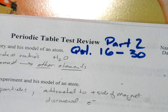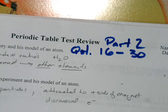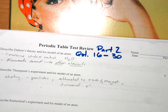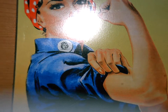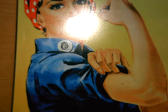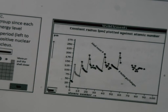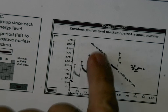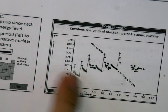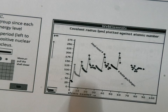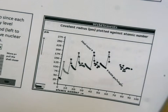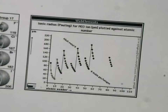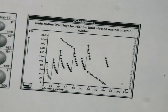Hello chemistry students, this is Mr. Kenney. We're going to go over the second half of the review sheet for the test — part two, questions 16 through 30. We're really going to get into the periodic trends. What makes the periodic table periodic is that there are repeating patterns. Here is the atomic radius — each of these blips represents a different period, and you can see they start high and get low, then restart high again.